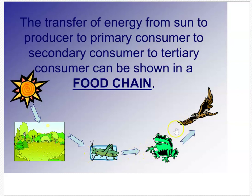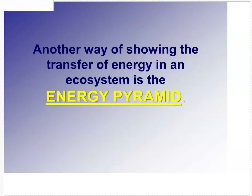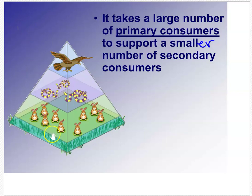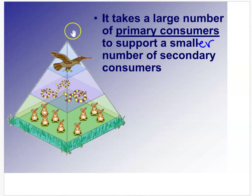Another way of showing energy transfer is an energy pyramid. Remember: a pyramid has a square base, and the sides go in and in as it goes up. Rabbits eat plants and use 90% of the energy. Snakes eat the rabbits and use 90%. The hawk eats the snakes and uses 90%, with the rest released. The pyramid shows how fewer organisms are supported at each higher level.